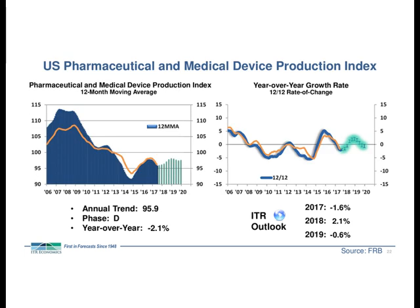Pharmaceutical and med device production is currently in Phase D recession, down two percentage points year over year. It will finish the year down but in Phase A recovery, followed by acceleration through 2018 into early 2019. The area of concern is another recessionary period moving into 2019, in line with the macro economy. If you sell into med device, this is a story of maximizing returns in 2018 — both to recoup losses this year and shield yourself from the coming 2019 recession. Notably, during that recession the 12 MMT will remain above current levels, so it won't be nearly as severe as what we've seen this past year.